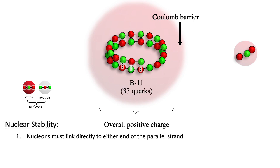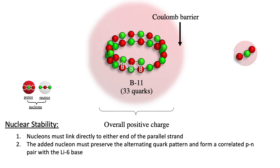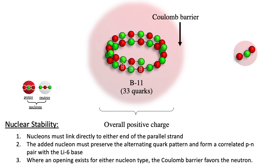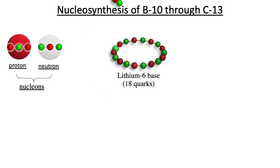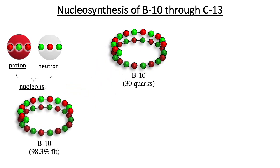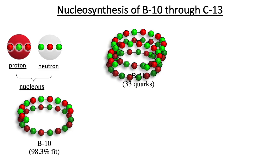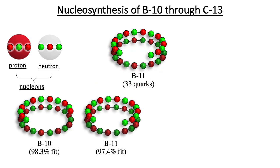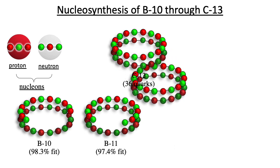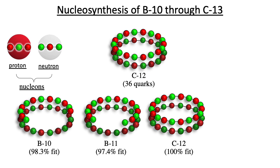In nucleosynthesis, nucleons add directly to the existing strand. The added nucleon must preserve the alternating quark pattern, and where an opening exists for either a proton or a neutron, the neutron is favored as it is not encumbered by the Coulomb barrier. Starting with boron-10, which has 12 quarks in its second layer, an additional neutron makes boron-11. The second strand now has a vacancy that can only be filled by a proton, yielding carbon-12 and filling the second layer. Since the first two layers are now filled, the next nucleon must begin a third layer — the Coulomb barrier screens the proton and favors the neutron, producing carbon-13.